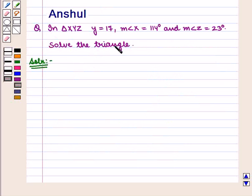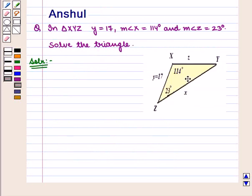To solve a triangle means to find the length of all its sides and the measure of all its angles. Let us draw its figure. This is triangle XYZ with angle X equal to 114 degrees and angle Z equal to 23 degrees. Also, the side opposite to angle Y, that is XZ, which we denote by Y, is equal to 17.